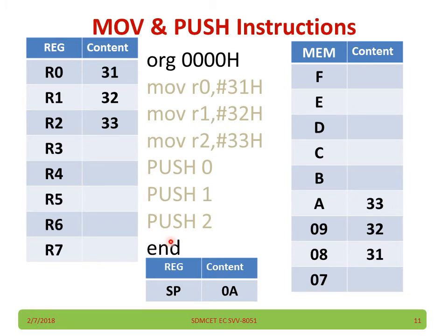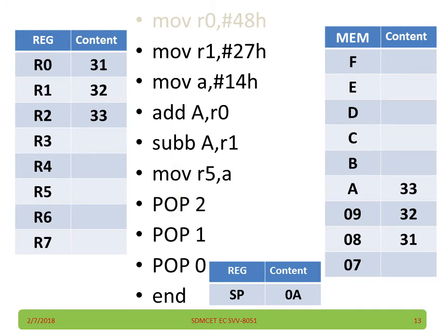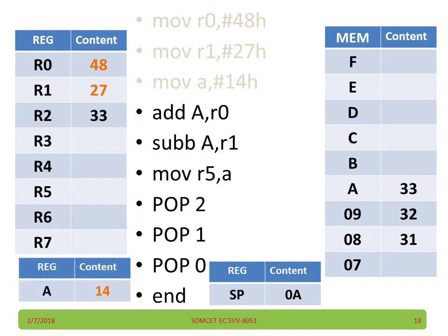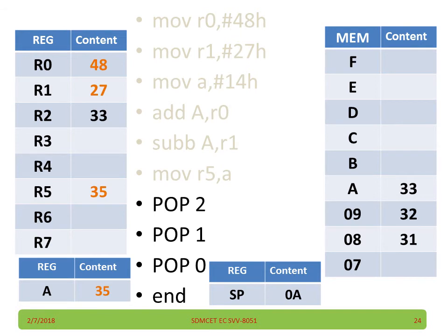Now consider, instead of end, I have a few more instructions like this. Move R0, #48h: 48 is moved to R0, previous content goes. Similarly R1 will become 27, A becomes 14. And add A, R0: A becomes the content of A plus R0, it will become 5C. Now subtract A, R0: A minus R0, the result is stored back into the accumulator, that will become 35. Move R5, A: A content is moved to R5 and R5 becomes 35.